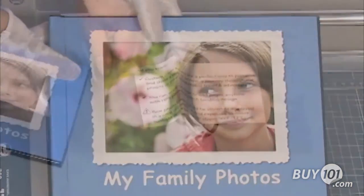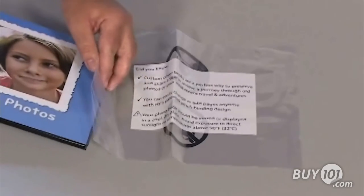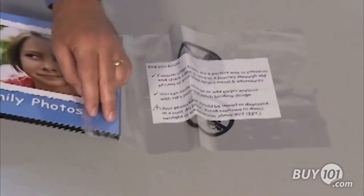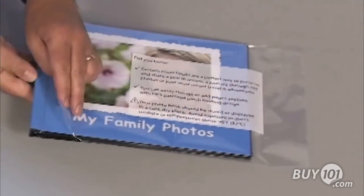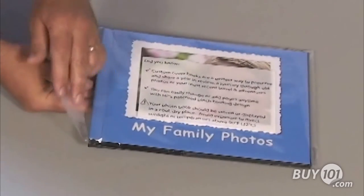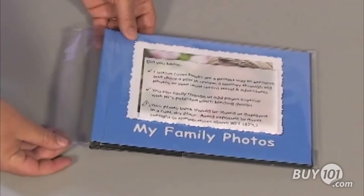Package the book. Place the book into the plastic photo book bag to protect it. Make sure the storage instructions on the bag show on the top of the book. Do not cover the instructions on the bag with the sales bar code sticker.